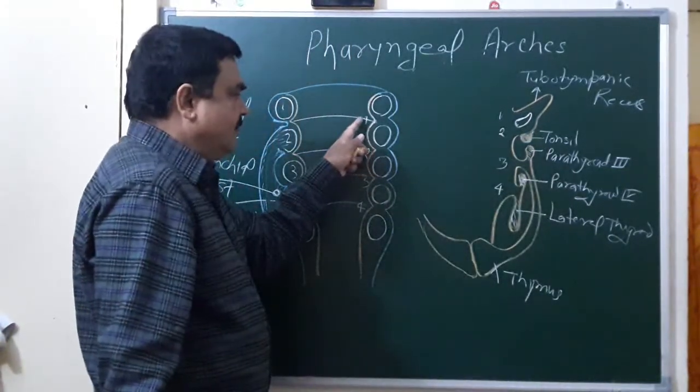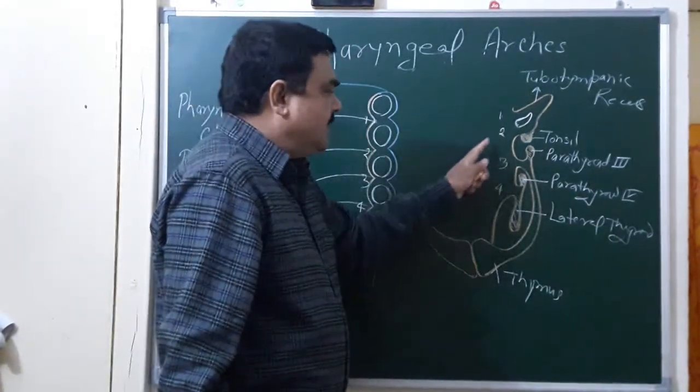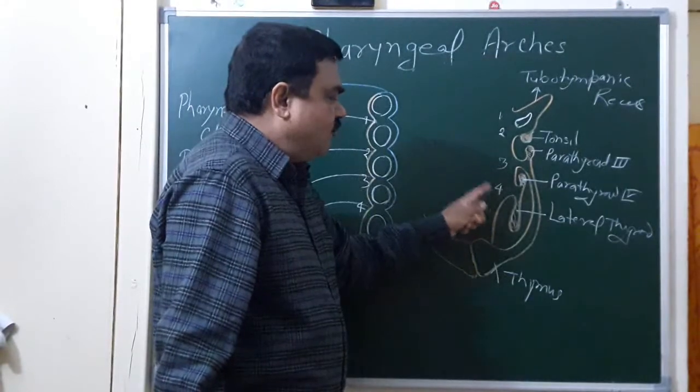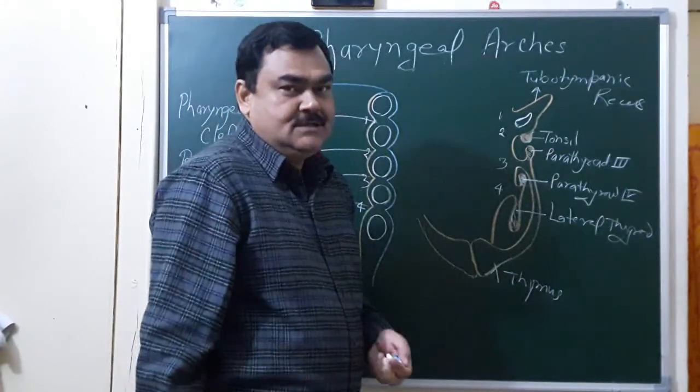So these structures are derived from the first, second, third, and fourth pharyngeal pouches.